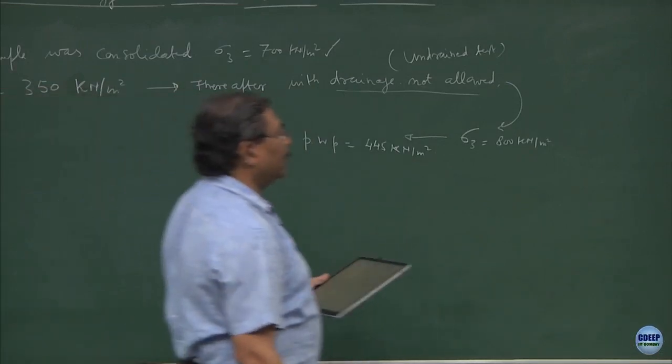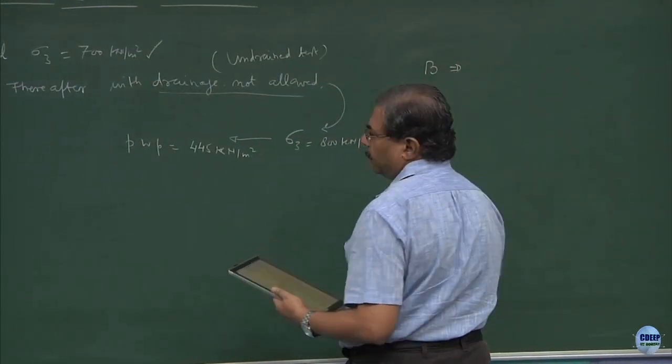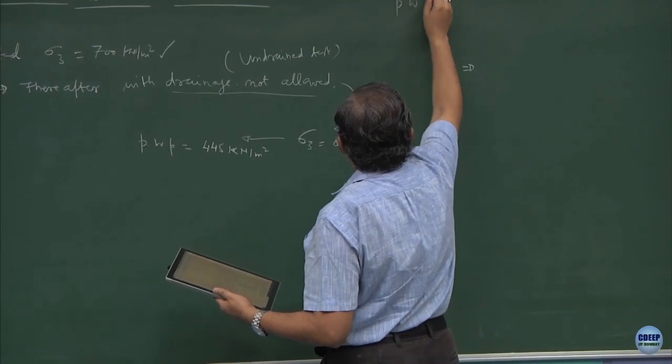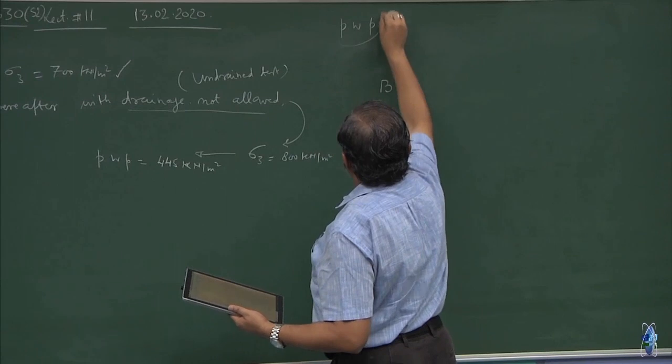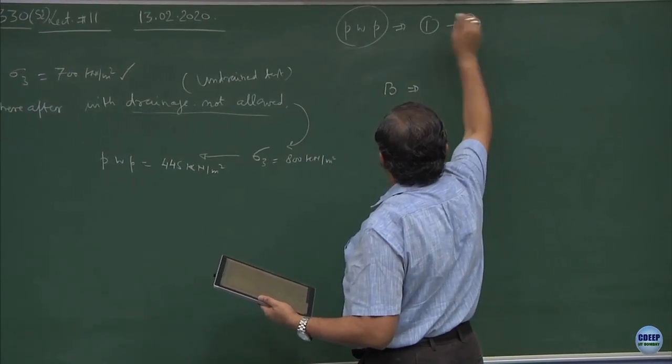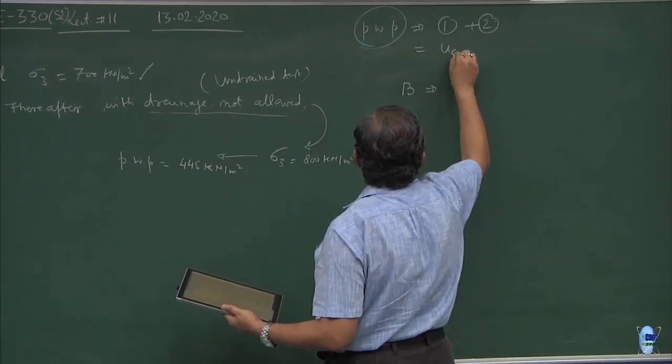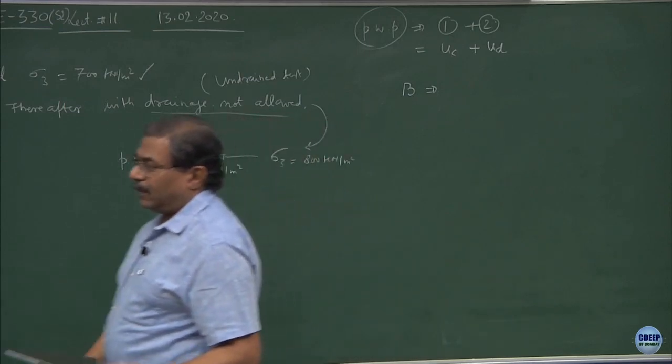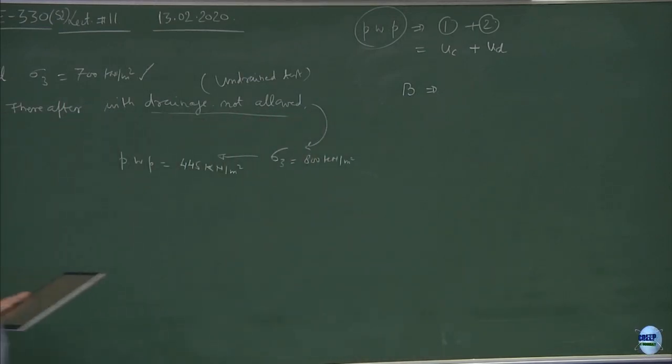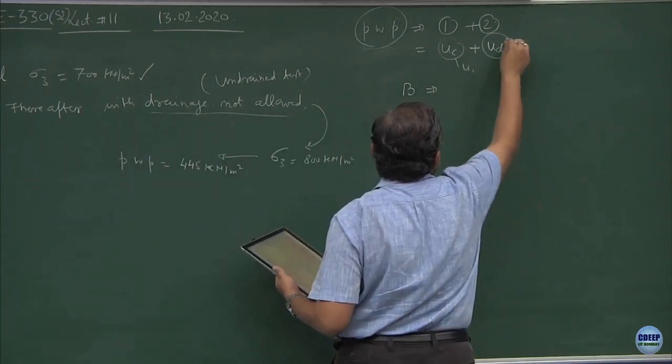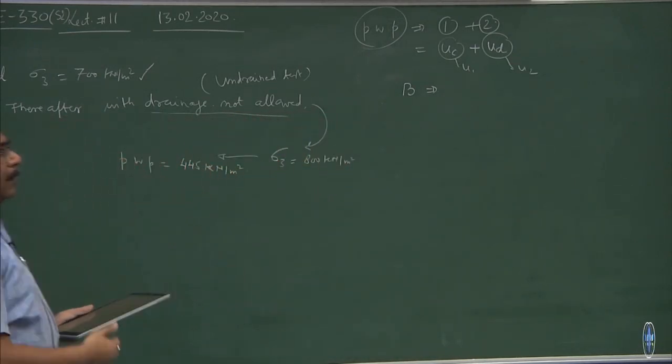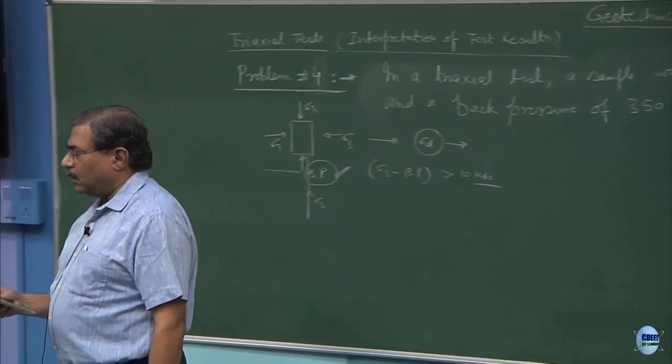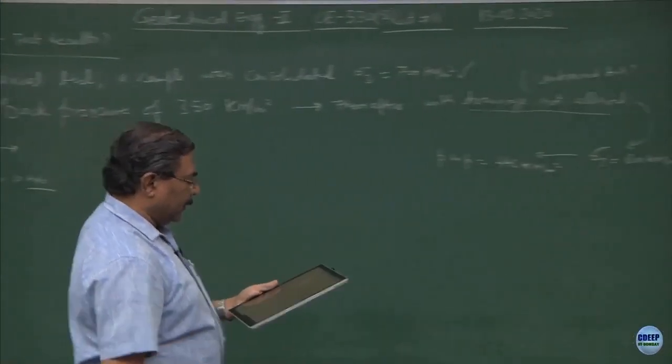Now we define a term which is known as B parameter. We have been talking about pore water pressures all the time. In my last lecture, I gave you an idea that pore water pressure constitutes of two parts. The first part is during consolidation and second part is during shearing. Normally we call them as u1 and u2. B parameter is normally used to understand what is the state of saturation of the sample.